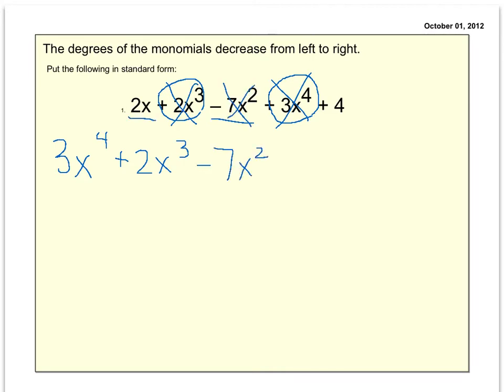Now this 2x is really 2x to the first, so that would come next. And then the only one we haven't used yet is the plus 4, the constant. If there's a number that doesn't have a variable with it, the constant will always come last.